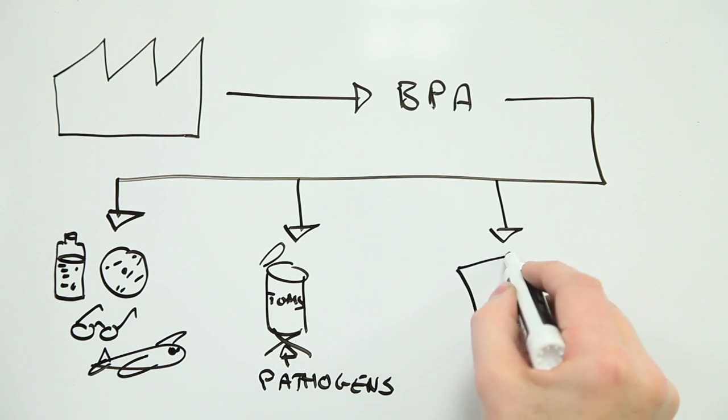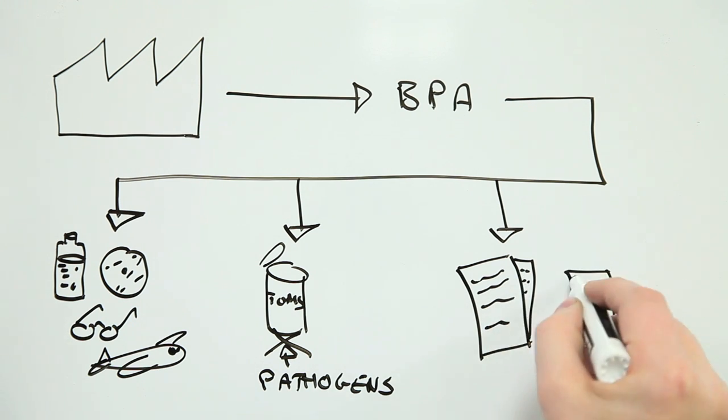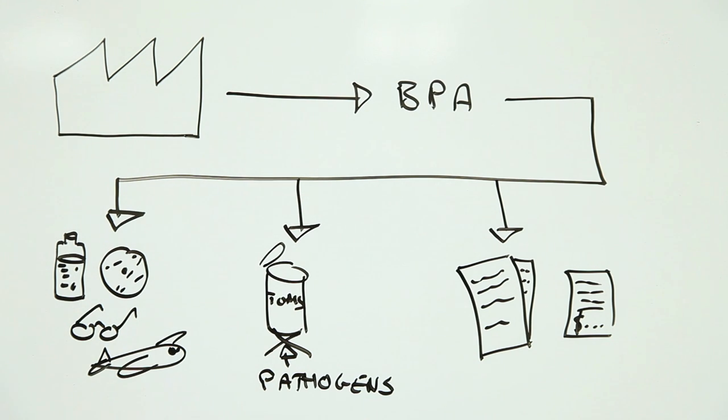BPA is also used in carbonless copy paper and thermal paper as the ingredient that ensures you can see what was typed. Which means that there's a pretty good chance you have some BPA containing cash register receipts hanging around.